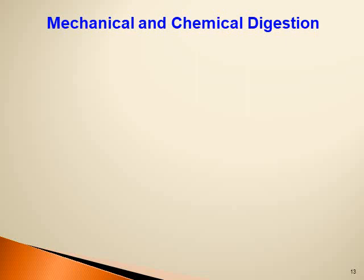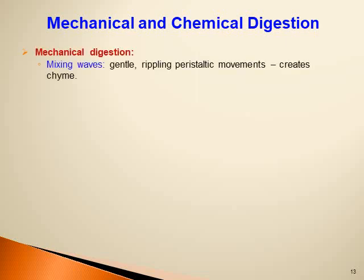Mechanical digestion in the stomach: the thick, strong muscularis externa produces mixing waves that create gentle rippling peristaltic movements, mixing the food bolus with gastric juice to produce a soupy liquid called chyme.